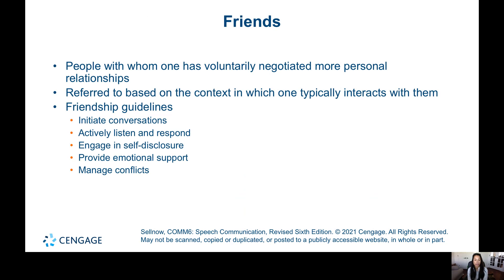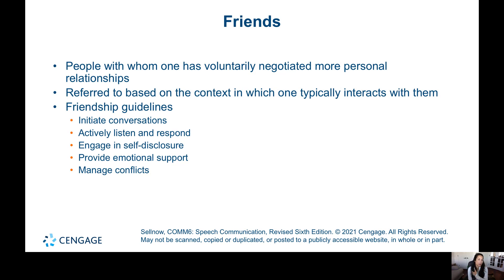Friends are people with whom one has voluntarily negotiated more personal relationships. You have more context with this person, more interactions, and you've gotten to know them on a deeper level. For example, I have acquaintances at work — people I see when making lunch, know their name but not much else — and conversation is just surface-level, like talking about the day or weather.